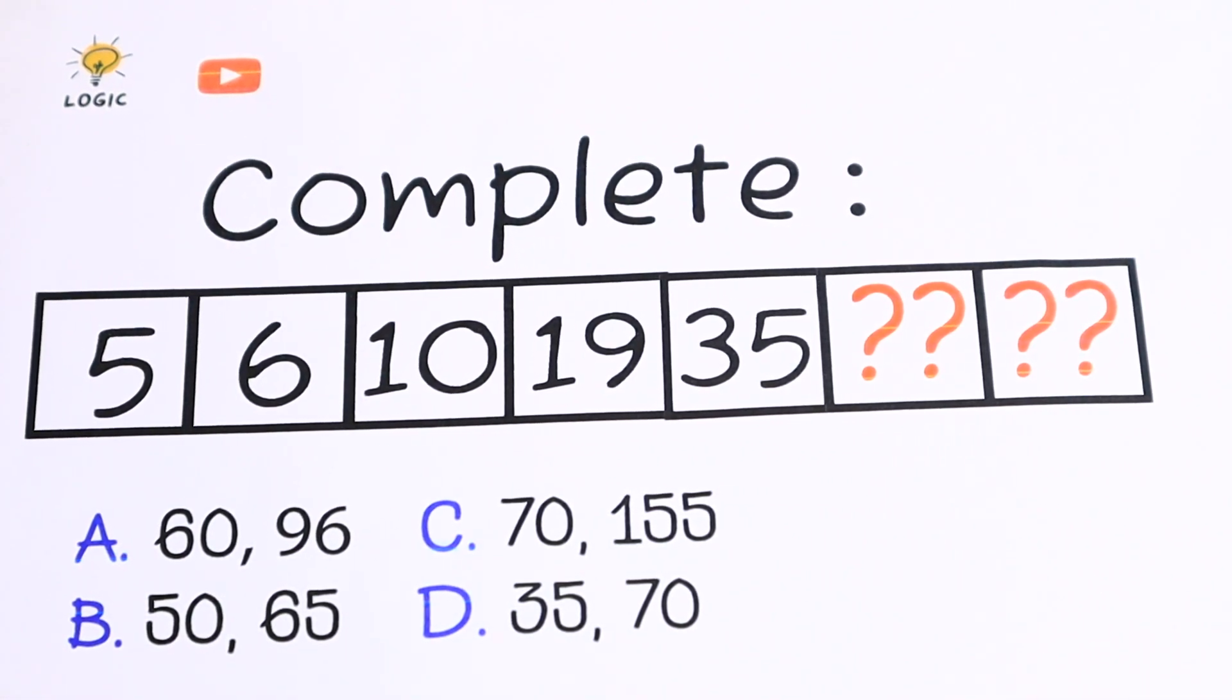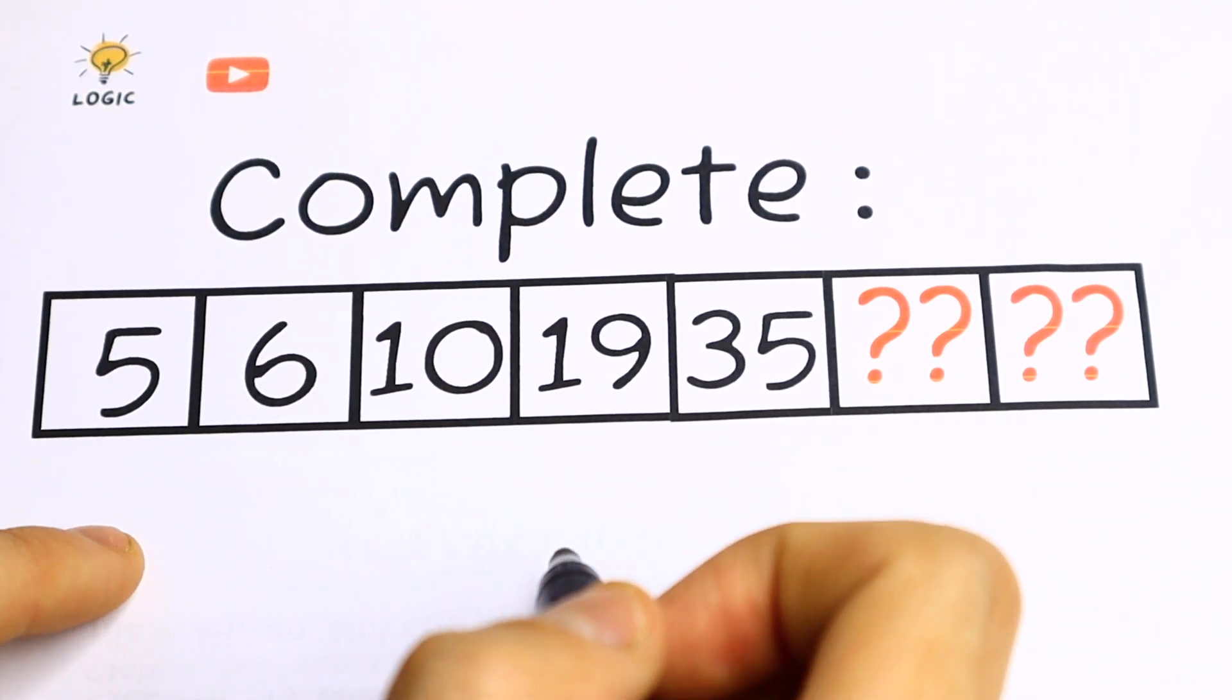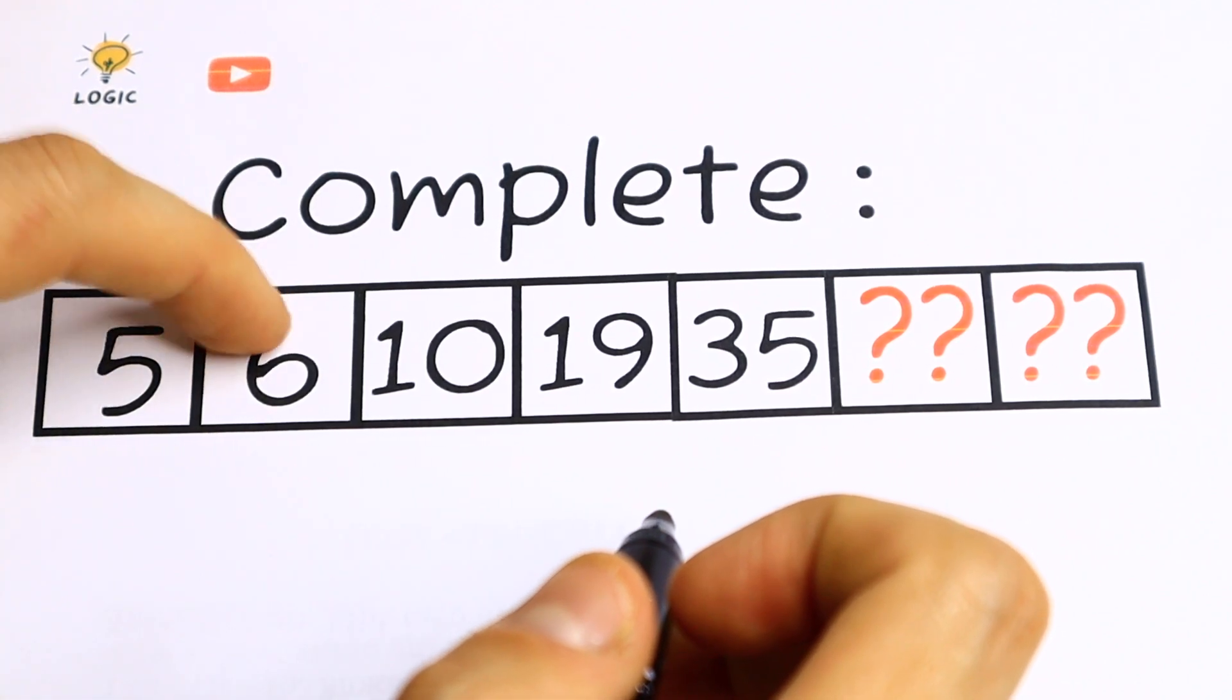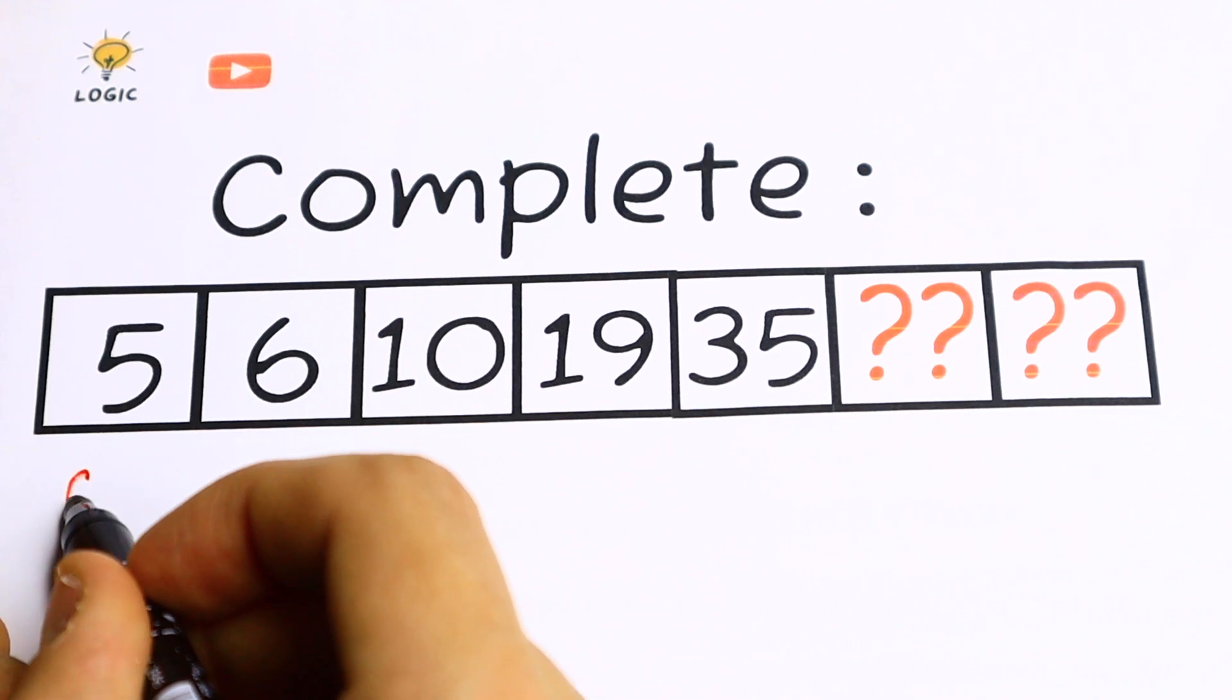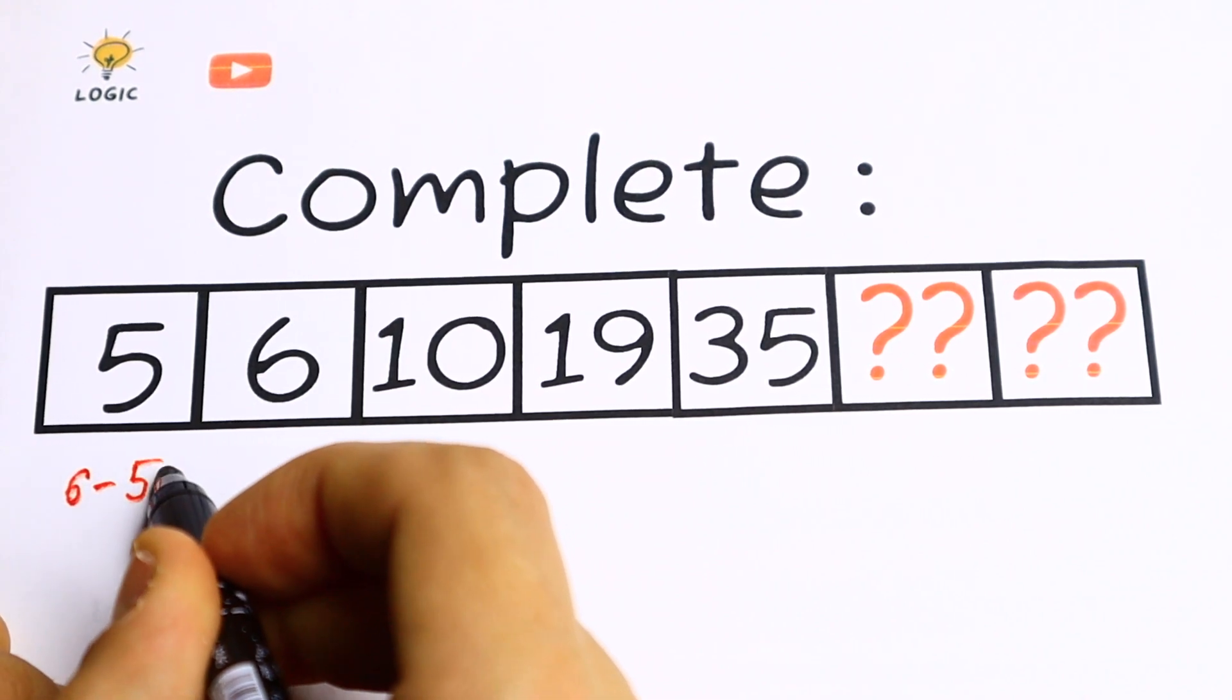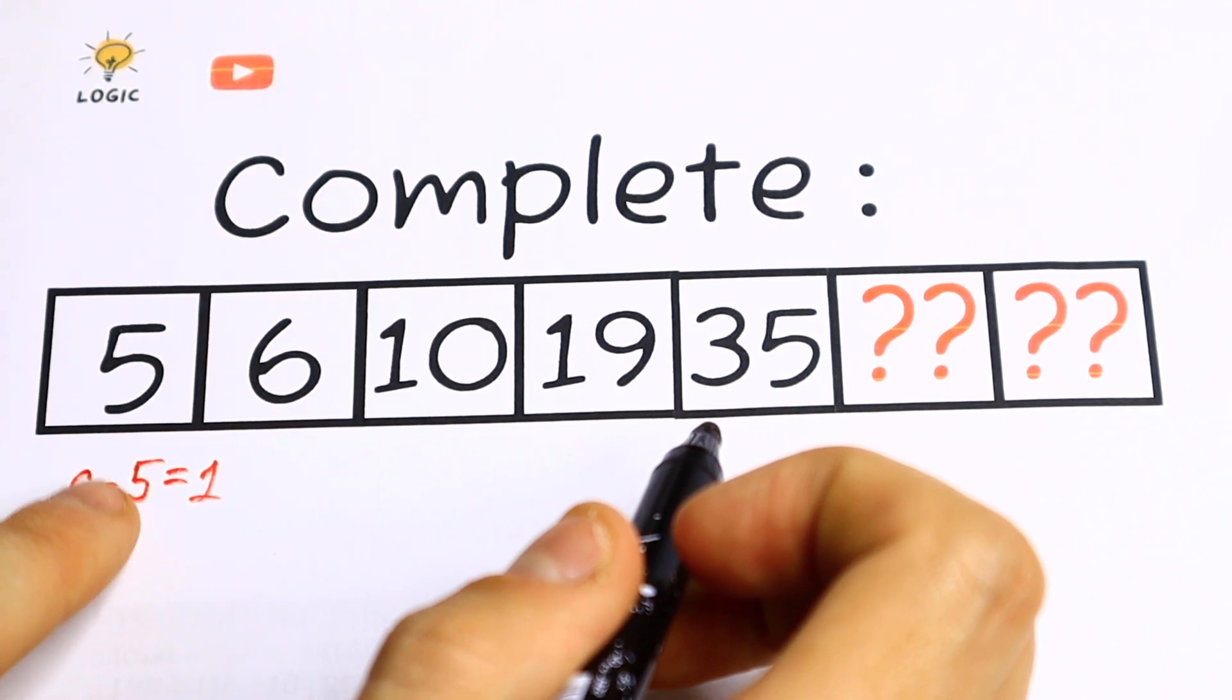So let's try to solve this interesting IQ question. How can we solve this question? Take a look. If we subtract from the second element the first one, what we will have? We will have 6 minus 5. We will have 1. So we subtract from the second element the first one. We will have 1.